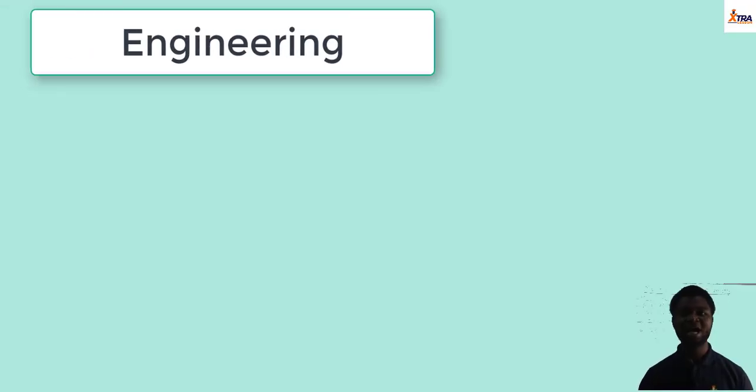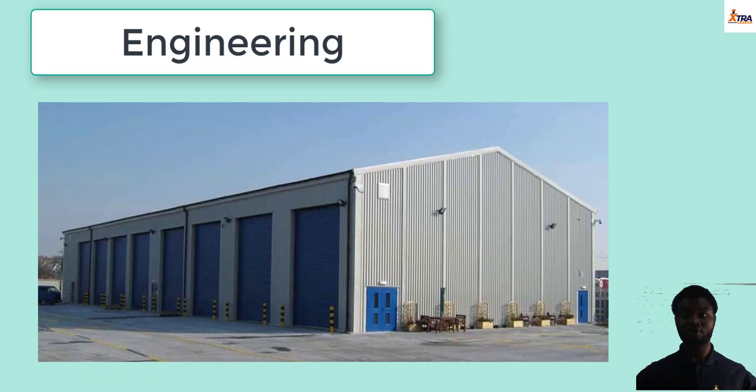Another one is engineering. How has chemistry helped us in engineering? Long before now, you would realize that certain metals are highly subject to corrosion. Imagine you have a very large industry or a large engineering firm. And in this engineering firm, you have metals running from one point to another, connections of metals to metals. And then you realize that these metals are subject to corrosion.